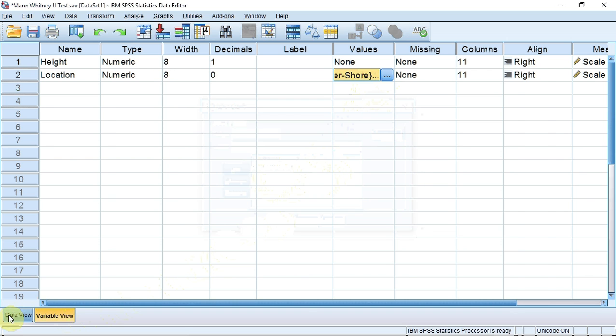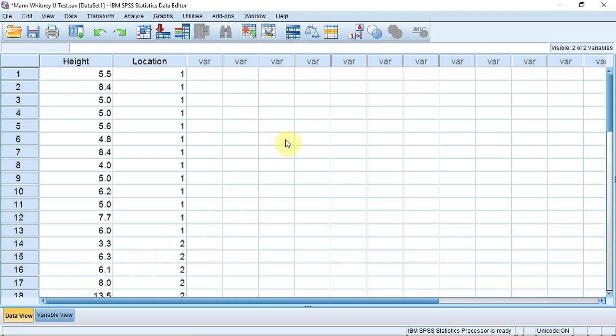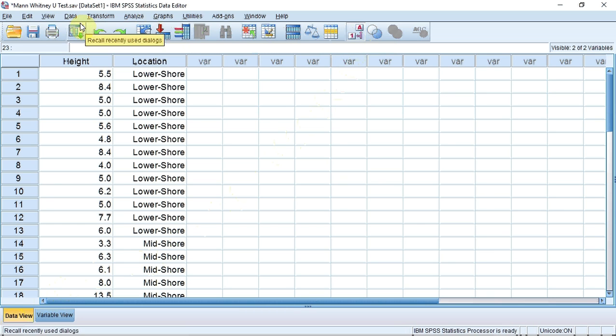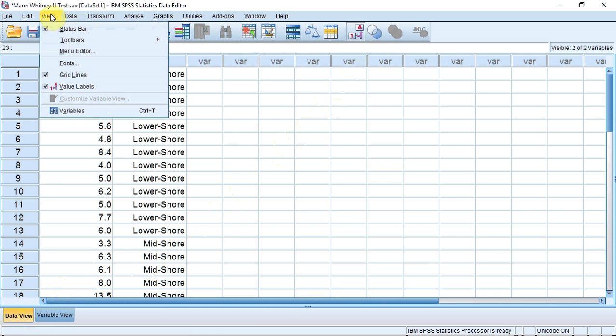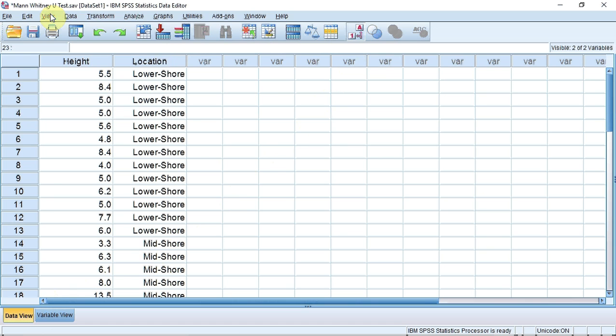I'm going to press OK, go back to data view. Now, if I press this symbol up here, we can get SPSS to actually display the label rather than the number. You can also do this by going to view, and down to value labels. So let's do the test.